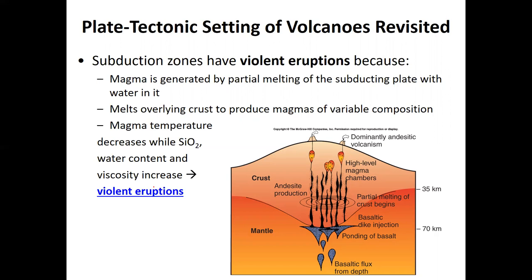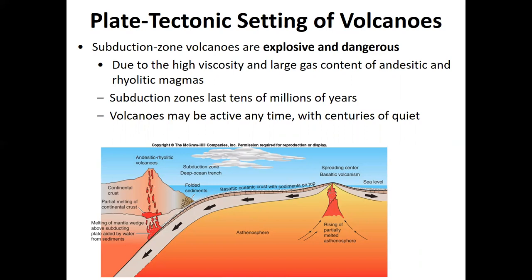We have all the ingredients for an explosive volcanic eruption at subduction zones: low temperature, high silica content, high viscosity andesitic or rhyolitic magma with large water content. Violent volcanic eruptions can only occur on continental crust because it acts as a filter — basaltic magma is transformed into andesitic or rhyolitic as it moves through continental crust. At mid-ocean ridges, basaltic magma rises straight to the surface with no continental crust to change its composition, resulting in peaceful eruptions. Mount Vesuvius is an example of a volcano forming along a subduction zone.